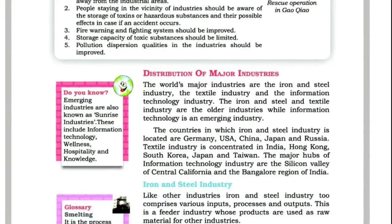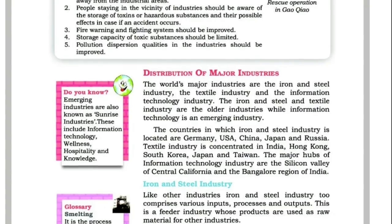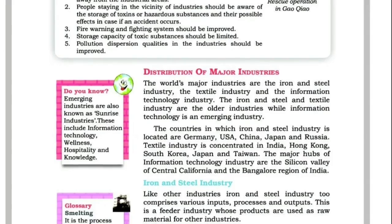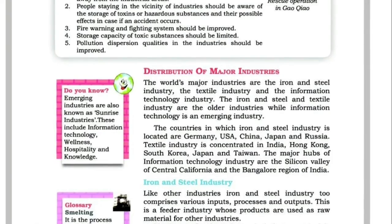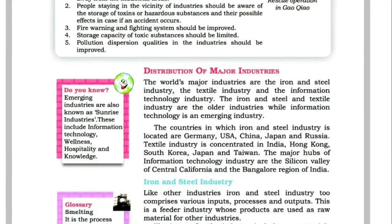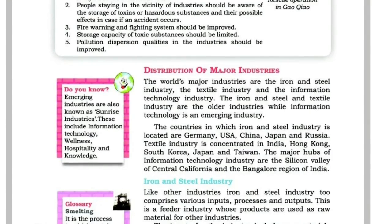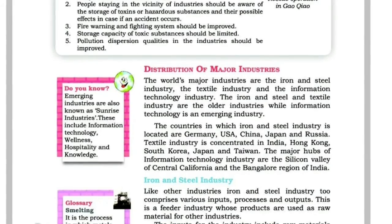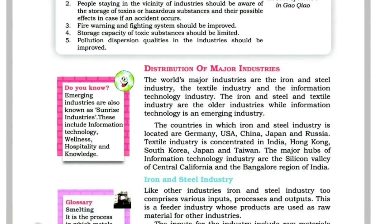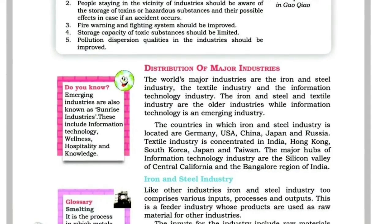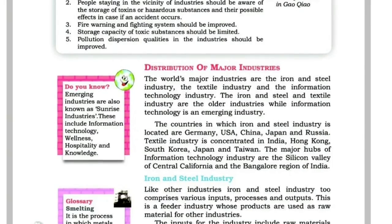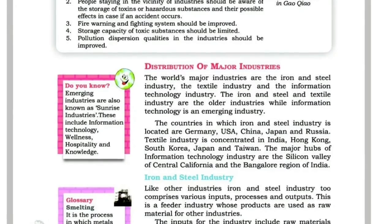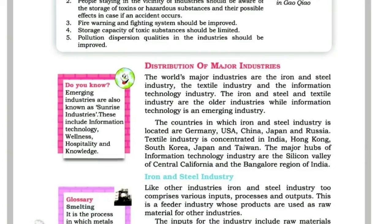The distribution of major industries: the various major industries are the iron and steel industry, the textile industry, and the information technology industry. The iron and steel and textile industries are the older industries, while information technology is the emerging industry.